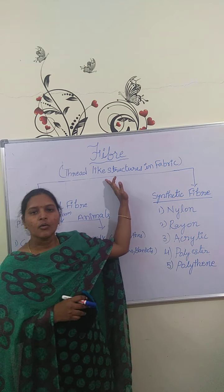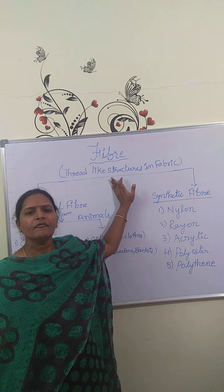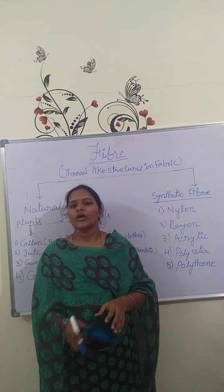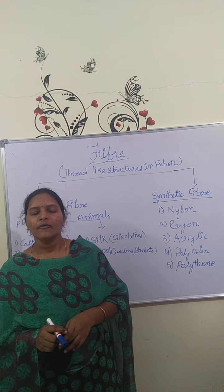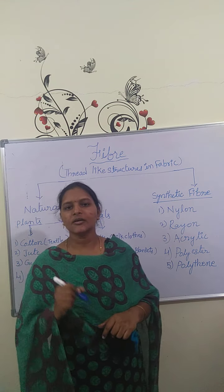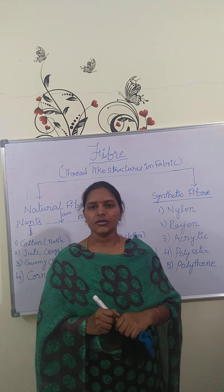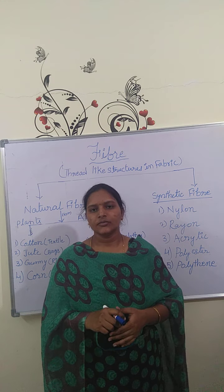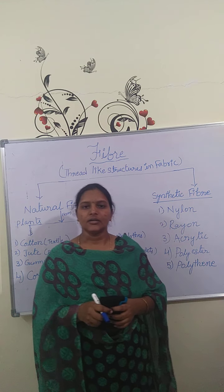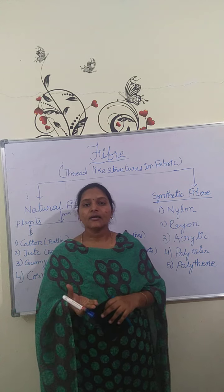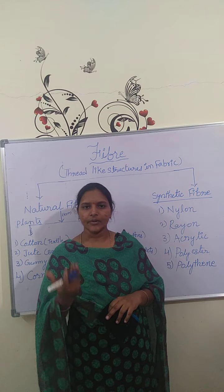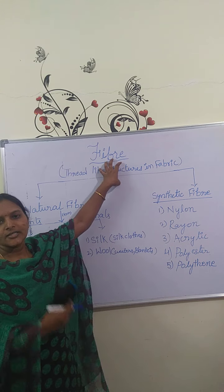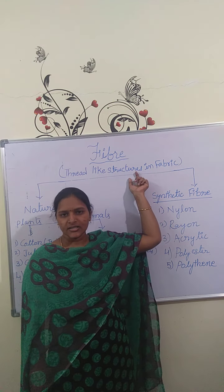First of all, what is fiber or fabric? Fabric is obtained from fiber. Fiber is nothing but strand-like structures which are present in the fabric. For example, when you observe cotton cloths, you can observe cotton fiber in them. In every cloth or textile material, you can observe different types of fibers present in the fabric. For example, in silk sarees you can observe the silk pattern, which is obtained from silk fiber.